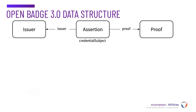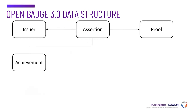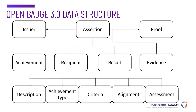The assertion, also known as the achievement credential, connects the achievement to the person that received it, declares when the badge was issued, and identifies how the badge can be verified. OpenBadges version 3 provides additional metadata fields, extending the value of badges to earners.